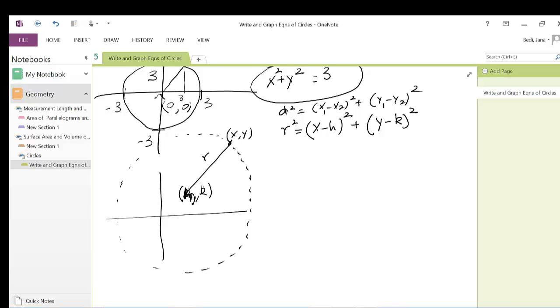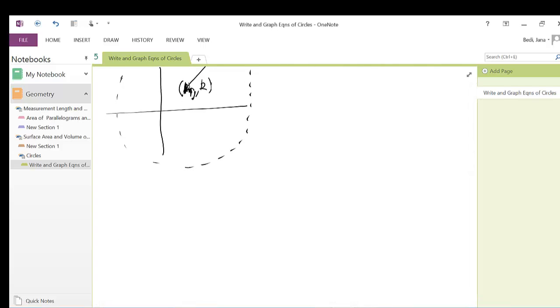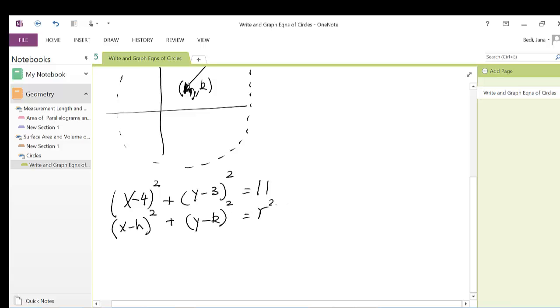What if you were given this equation? So let's say (x - 4)² + (y - 3)² = 11. Well, what I'm going to do is I'm going to write my standard equation.